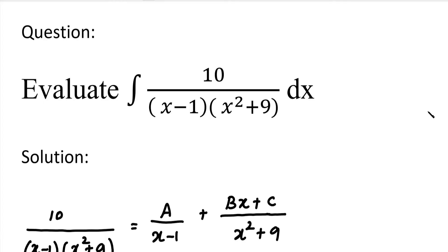If we apply the partial fraction method, first we check if it is a proper function. A proper function is one where the degree of the numerator is less than the degree of the denominator. If the degrees are equal, or the numerator degree is greater, it is not a proper function. So, how do we handle the function?